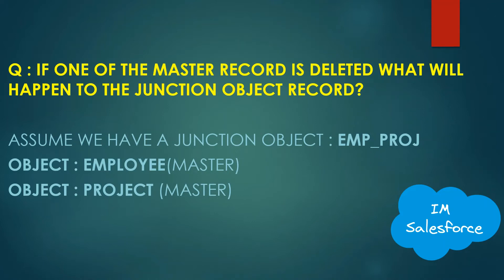Hey, hi all. In this video we will discuss one of the interview questions that is mostly asked, and it is related to master-detail relationship in Salesforce. The question goes like this: if one of the master records is deleted, what will happen to the junction object record?